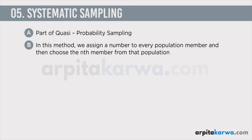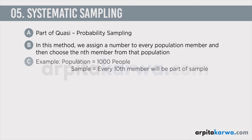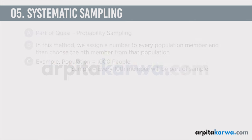For example, suppose you have a population of 1000 people. You give numbers to all 1000 people and decide to choose every 10th member as your sample. So you select the 10th, 20th, 30th, 40th, 50th person, and so on. All those people assigned every 10th position will be part of your sample. This method of choosing every nth member is known as systematic sampling.